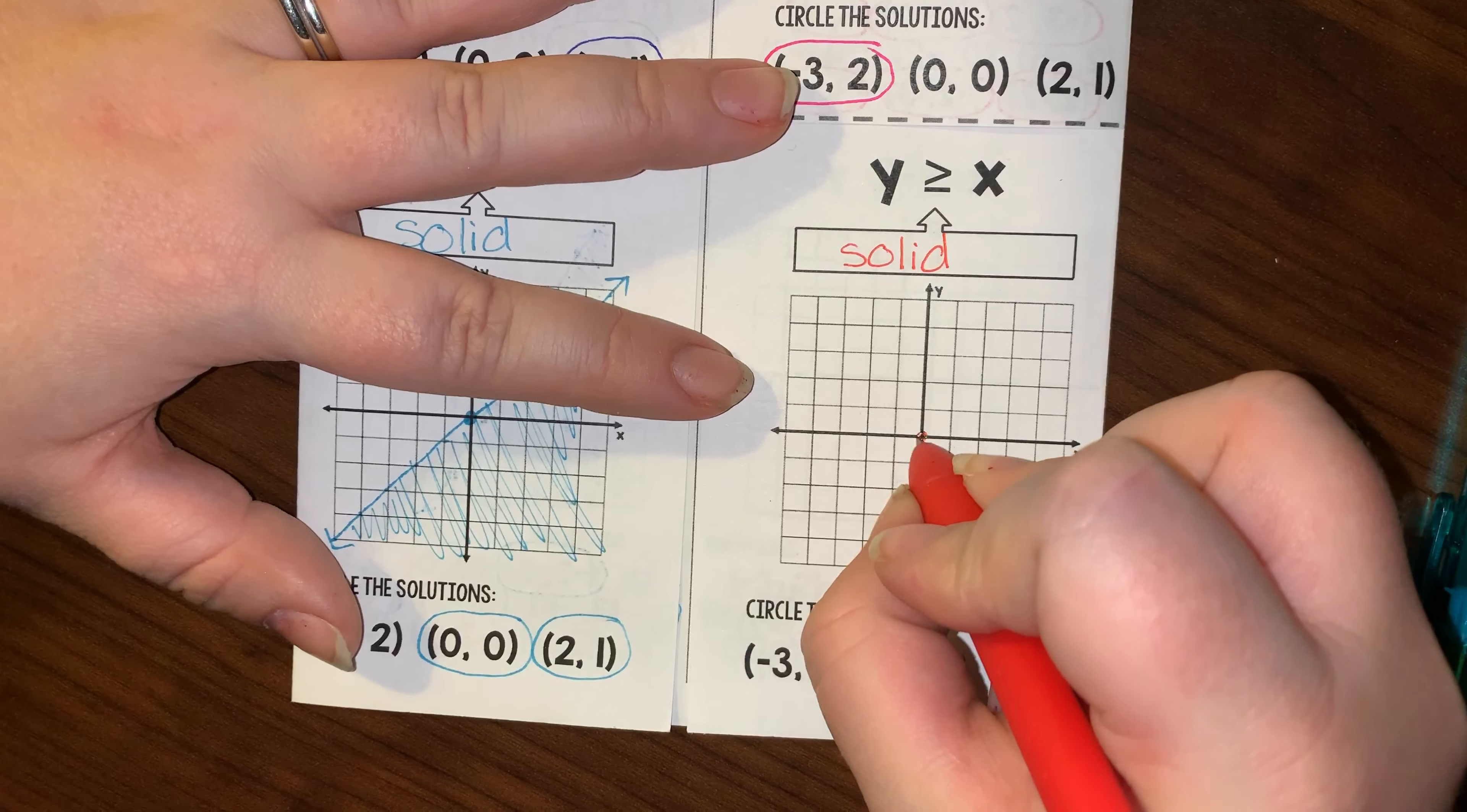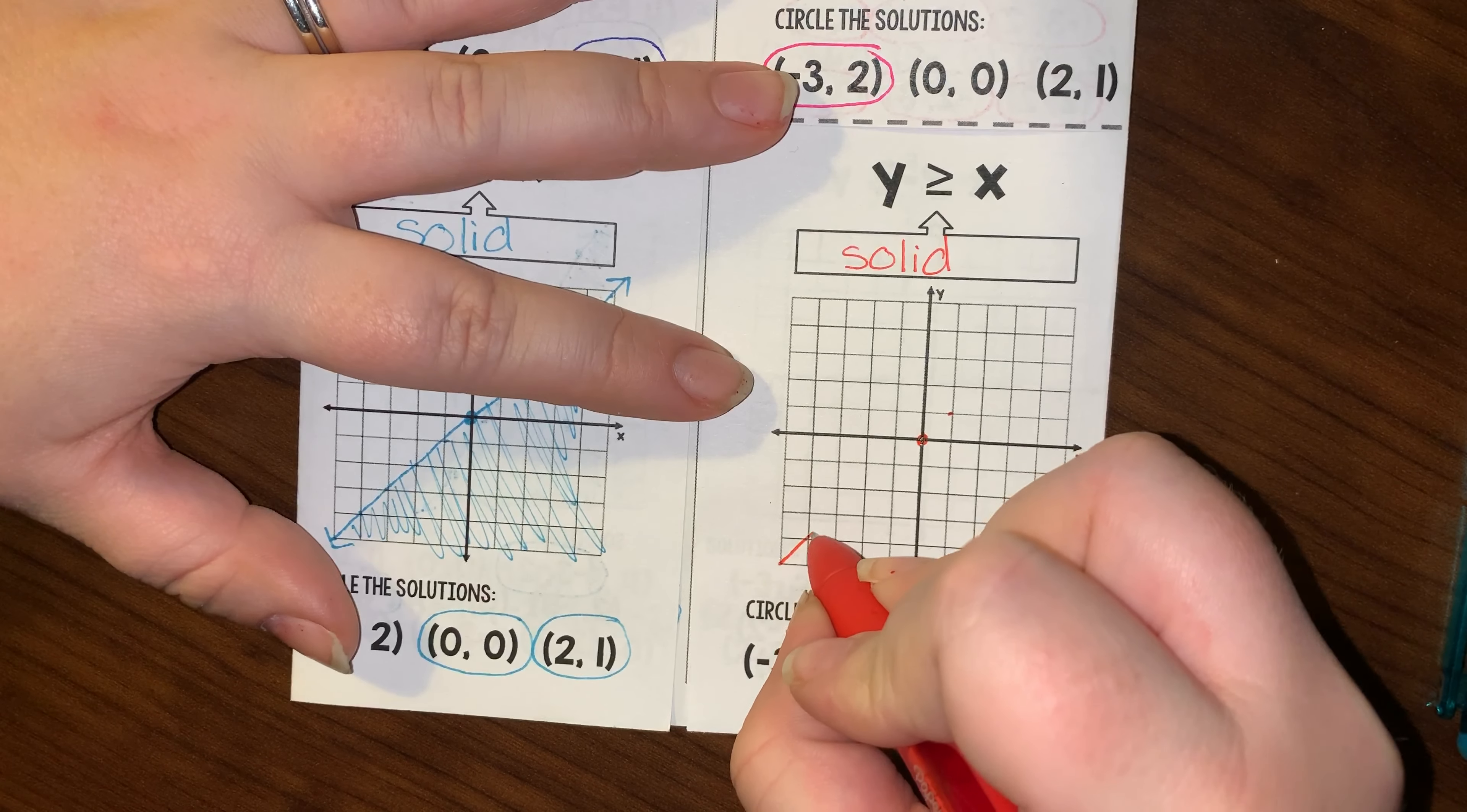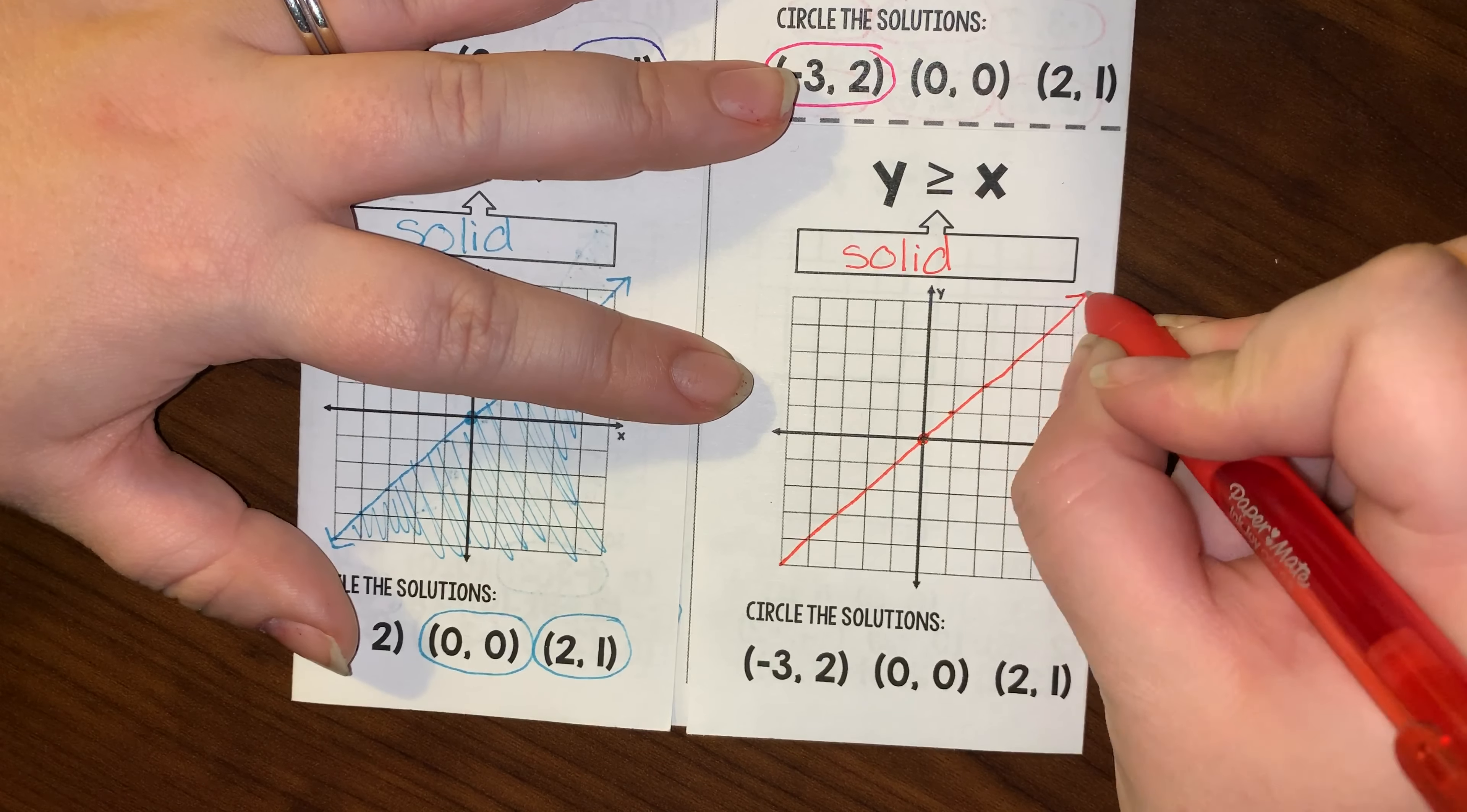So again, there's no y-intercept, so it's passing through 0, 0, and my slope is a positive 1. So I'm graphing this with a solid line.